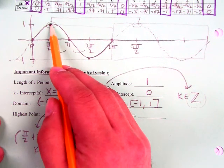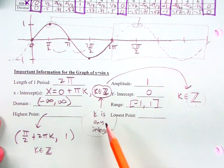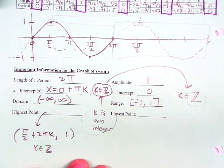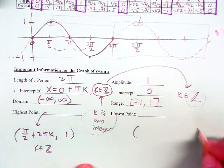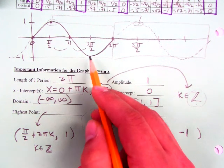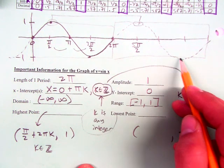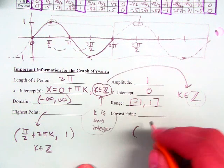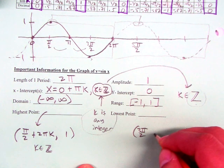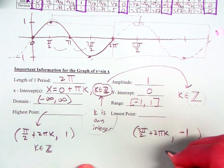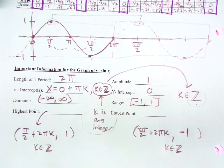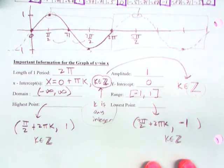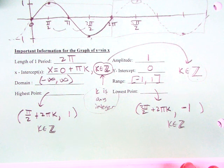Because from this point to this point is 2 pi units away. They're all 2 pi units apart. Now, the lowest point will be similar. The y-coordinate for the lowest point is always negative 1. And do you guys see that these are also 2 pi units apart? So we'll start at x equals 3 pi over 2, and we can also add 2 pi k. That's for sine.